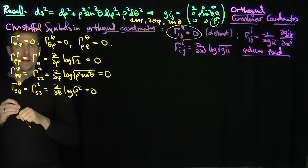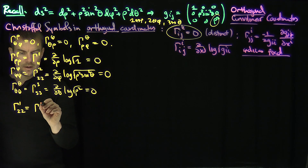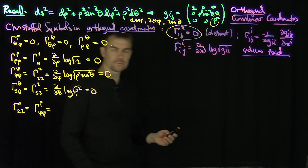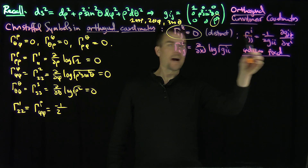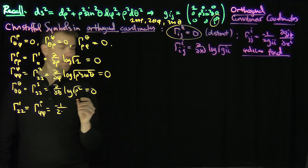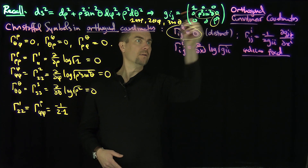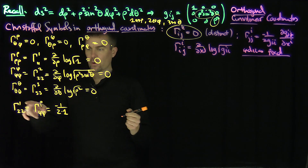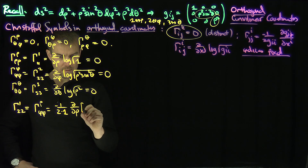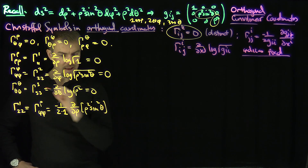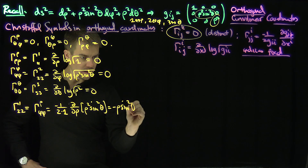Let's look at γ^(ρ,φ,φ) = γ^1_22. Using the formula for γ^i_jj, with i=1, that's −(1/2) · g^11 · ∂(g_22)/∂x^1. Since g^11 = 1, I need the ρ-derivative of g_22 = ρ² sin²θ. This gives exactly −ρ sin²θ.